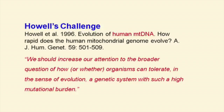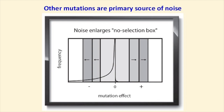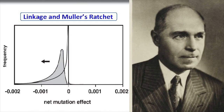Natural selection can only act upon the worst mutations. Selection can only act upon a mutation that is damaging enough to affect reproduction. Most mutations are only slightly deleterious, and therefore selection won't do anything about them — they go undetected.